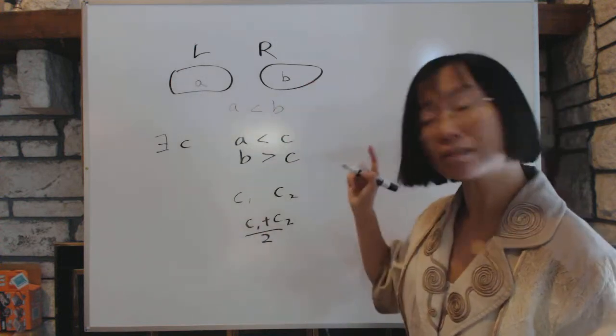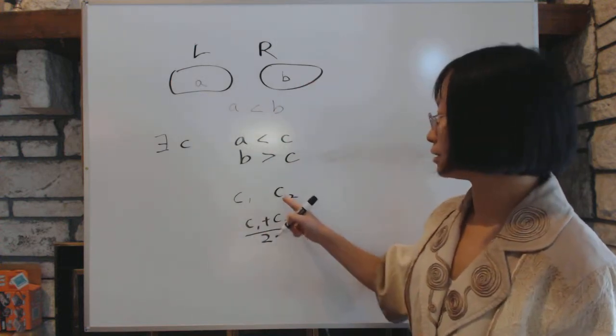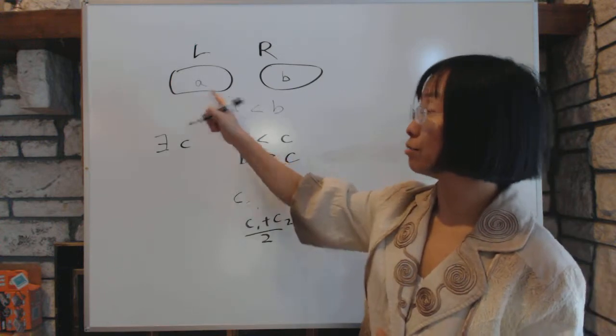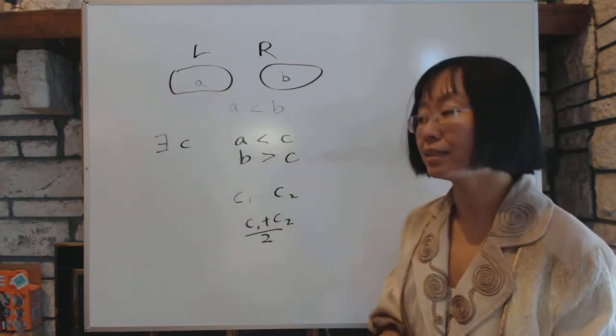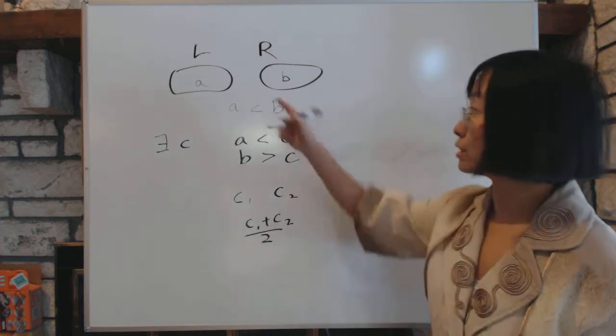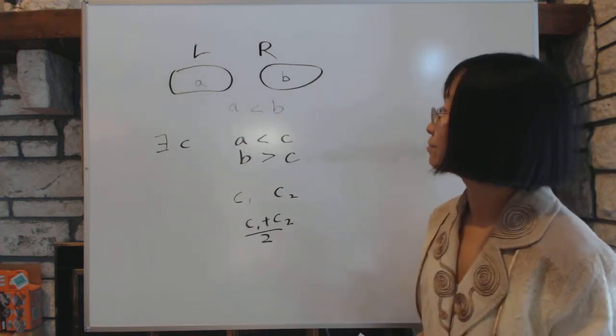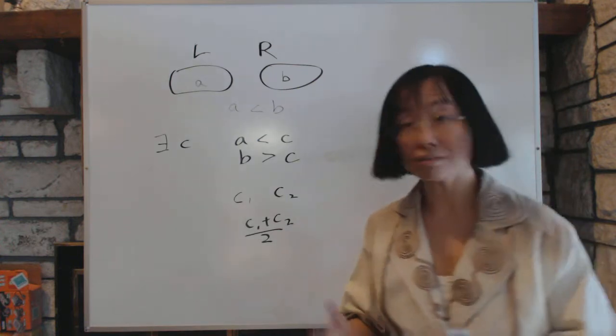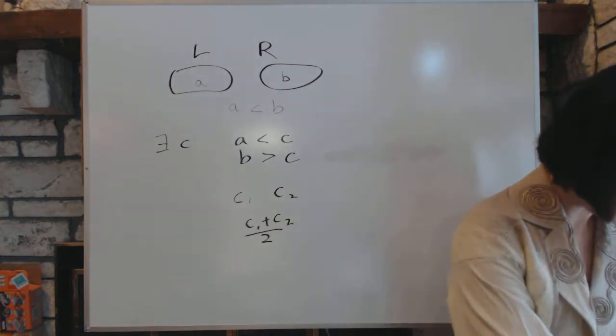And because it's less than C2, it has to go to L. Because anything less than the cut belongs to the L side. Which is not possible because we already said they do not have any common numbers. So as a result, we know the cut has to be unique.